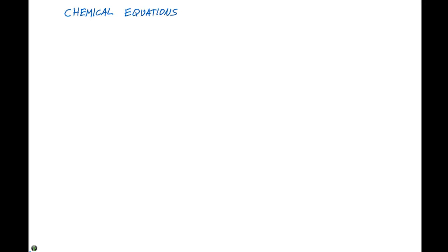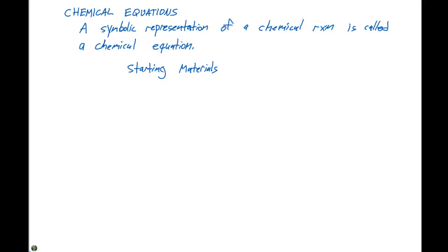A chemical equation is a symbolic representation of a chemical reaction. In these chemical equations, we typically represent the starting materials over on the left-hand side, we give a little arrow, and have the final materials over on the right-hand side.